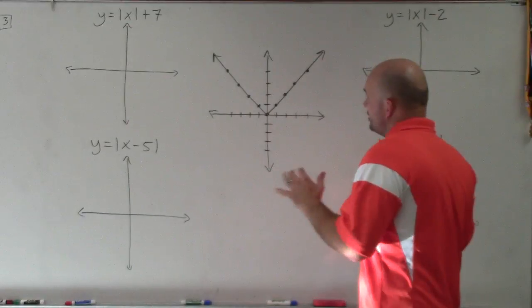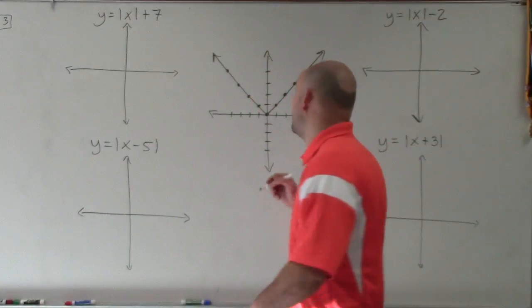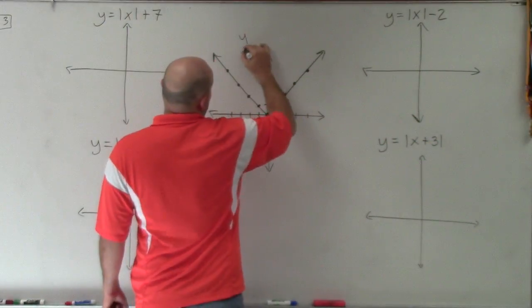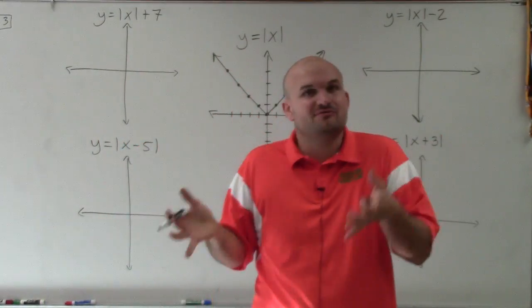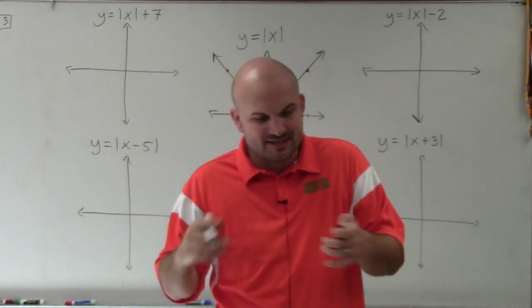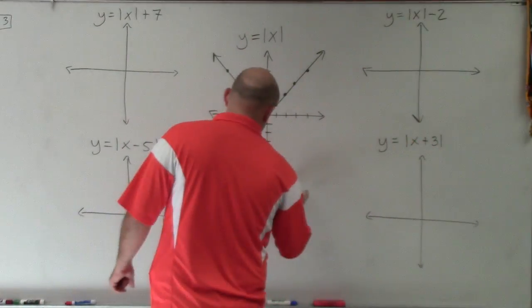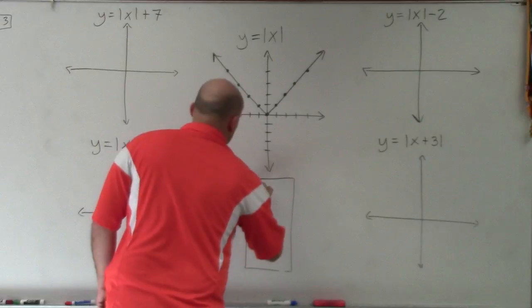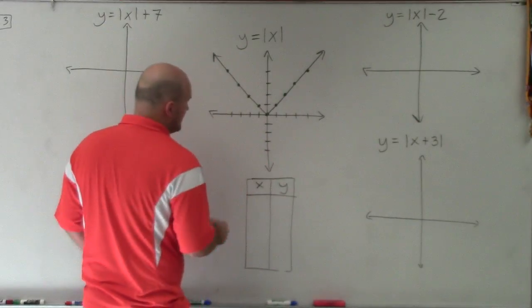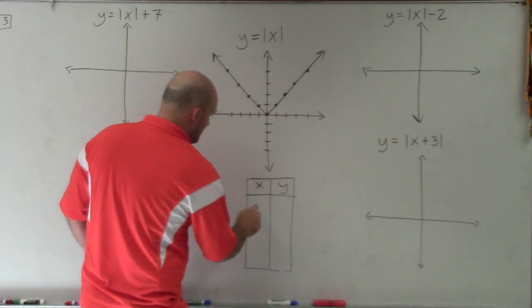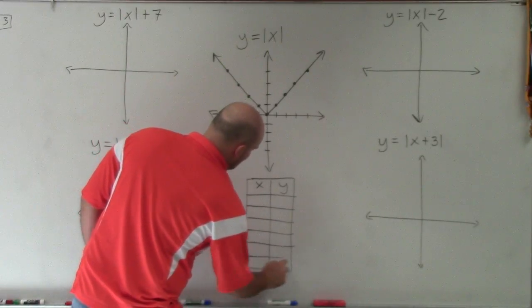Welcome, ladies and gentlemen. What I'd like to do is talk to you about transformations of the absolute value equation. What we have here is what we call the parent graph, and the parent graph is the absolute value of x. When we create a table for absolute value, depending on whatever values we choose, it creates what we call the v-graph.